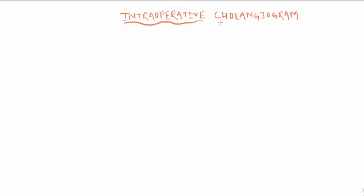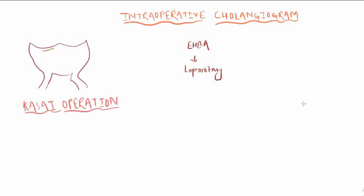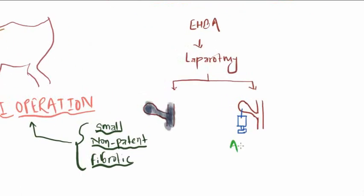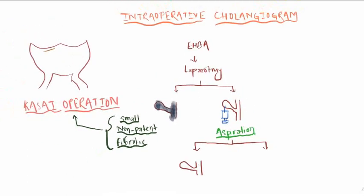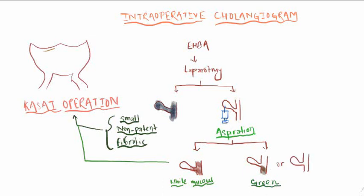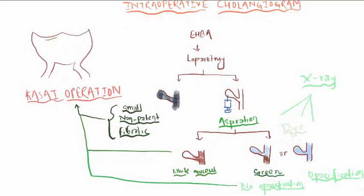Intraoperative cholangiogram is done during surgery for extrahepatic biliary apparatus, known as Kasai operation, by open incision or laparoscopy. We observe the condition and degree of stenosis. If there is small non-patent fibrotic tissue, we operate. If not, we do aspiration. After aspiration, if the result is white mucus, we operate. If we get green fluid after aspiration, we inject dye into the gallbladder and take x-ray images. If there is opacification, it is normal. If no opacification, we do Kasai operation.